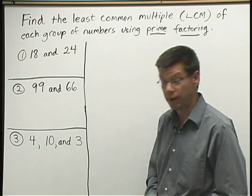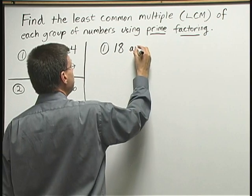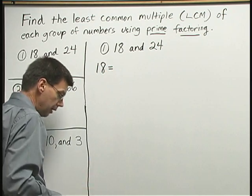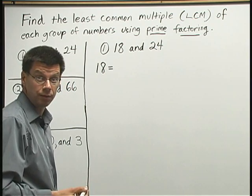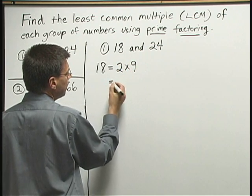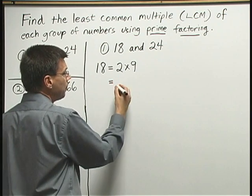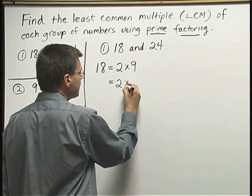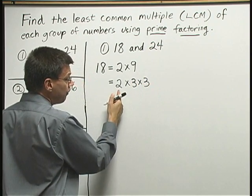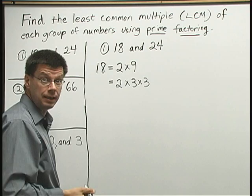Let's go ahead and start number 1. We're looking for the LCM of 18 and 24. I'll take 18 first and break it down using multiplication. One way to write 18 is 2 times 9. 2 is prime, so I'll recopy the 2. I can break down the 9 further into 3 times 3. I now have 2 times 3 times 3 — those are all primes, so I've written 18 as a product of primes.